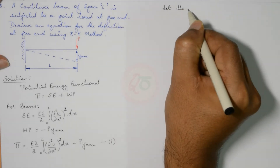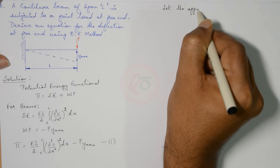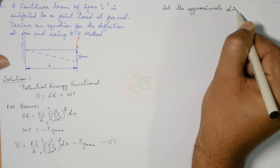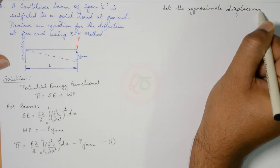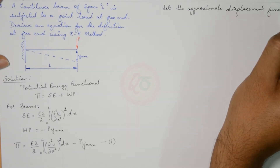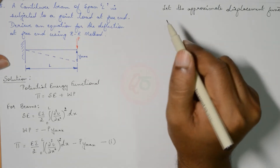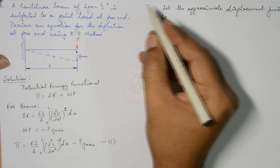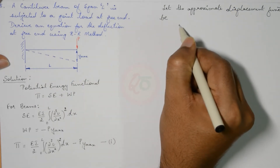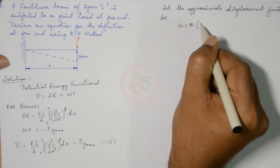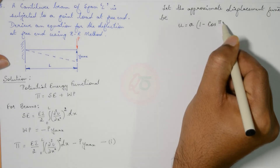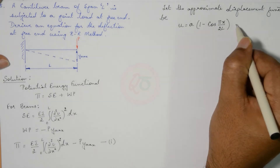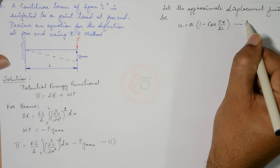Let the approximate displacement function be: u equals a times (1 minus cos(πx / 2L)). We can call this equation 2.